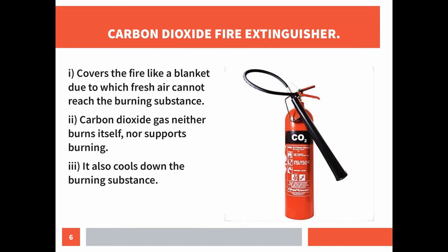If we cannot use water on electrical fires, how can we use carbon dioxide? Carbon dioxide is denser than air, so it forms a layer around the burning substance, covering it like a blanket, preventing fresh air from reaching it and stopping the supply of oxygen. The burning substance does not get oxygen and hence stops burning. Carbon dioxide neither burns itself nor supports burning — that is why it is used as a fire extinguisher.